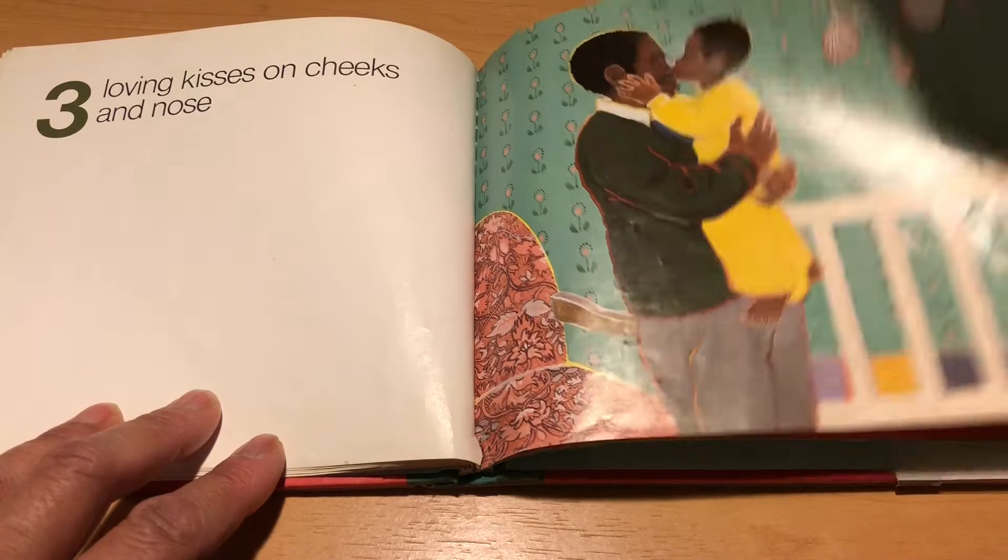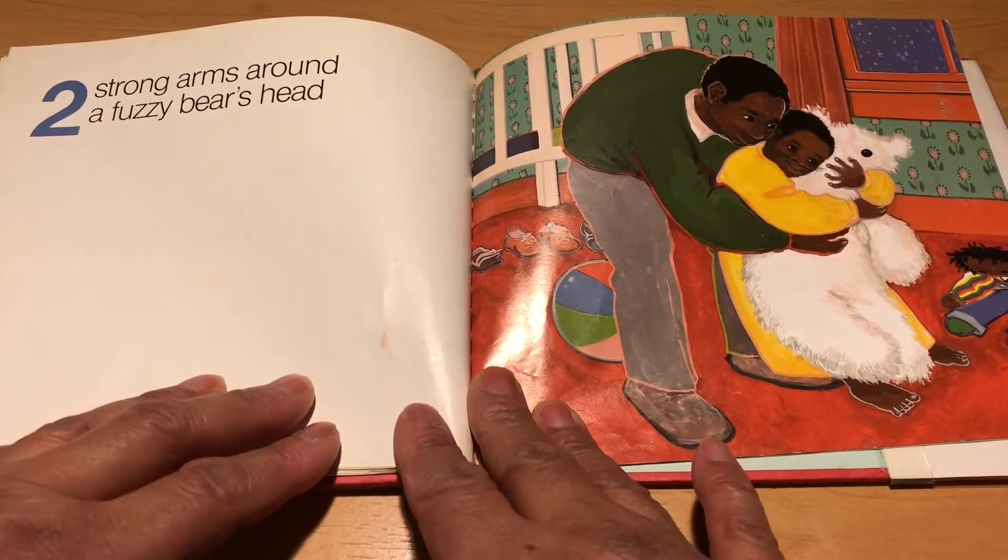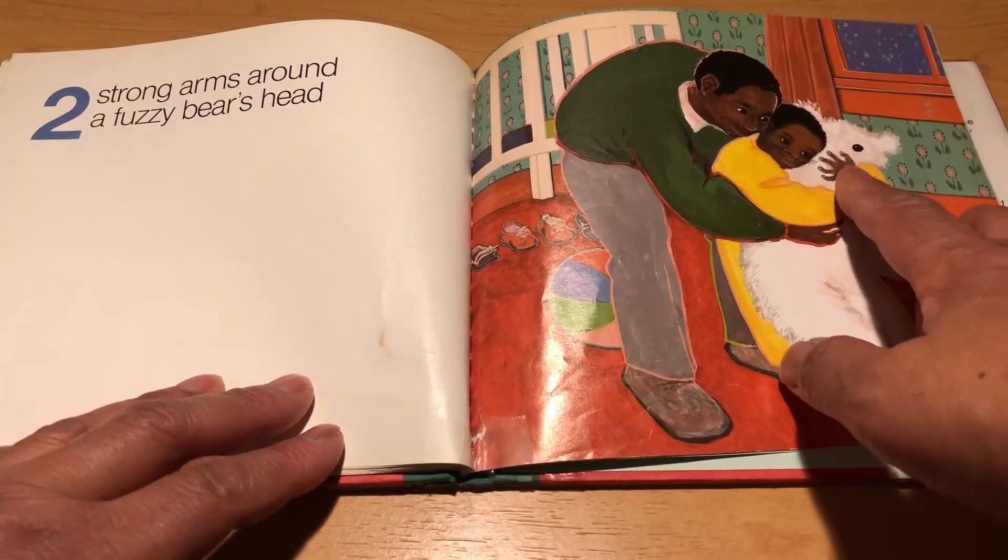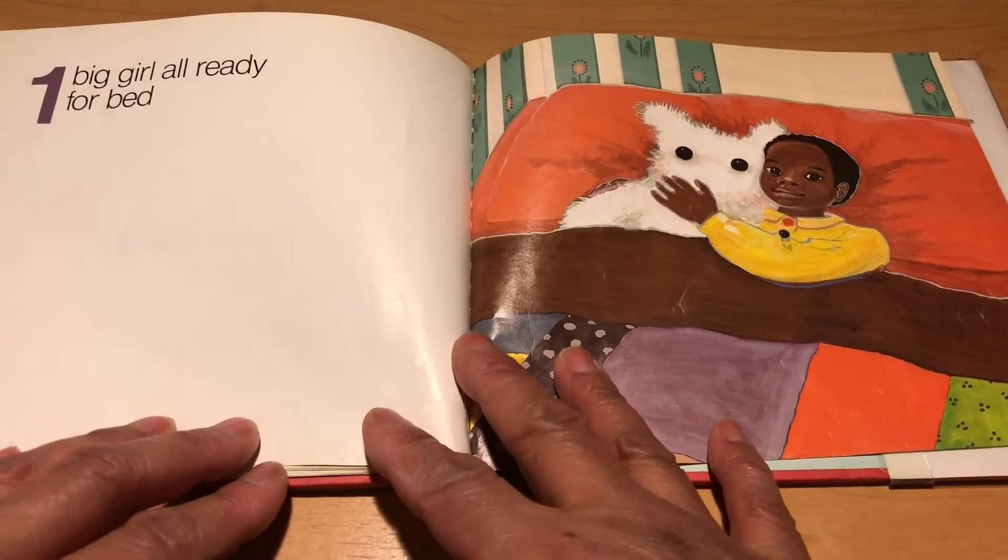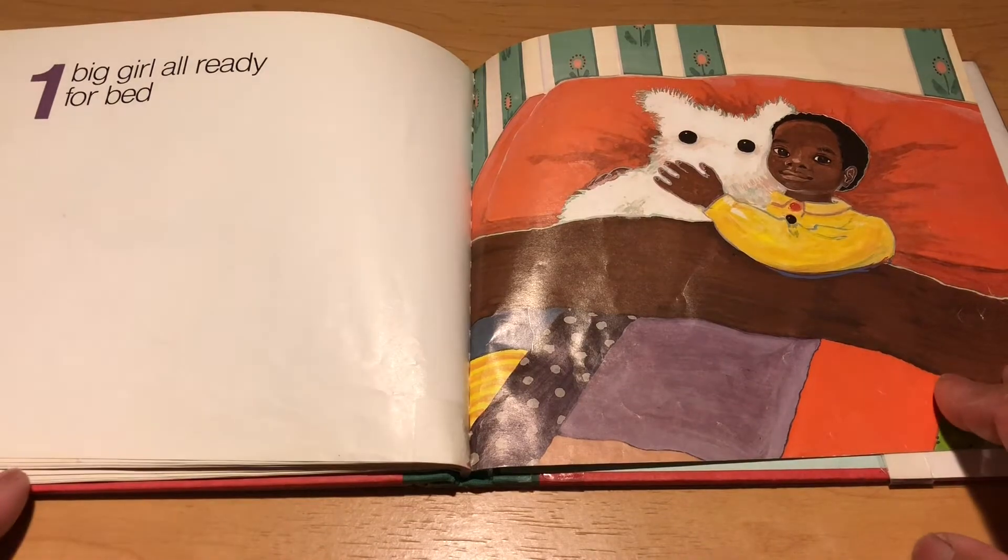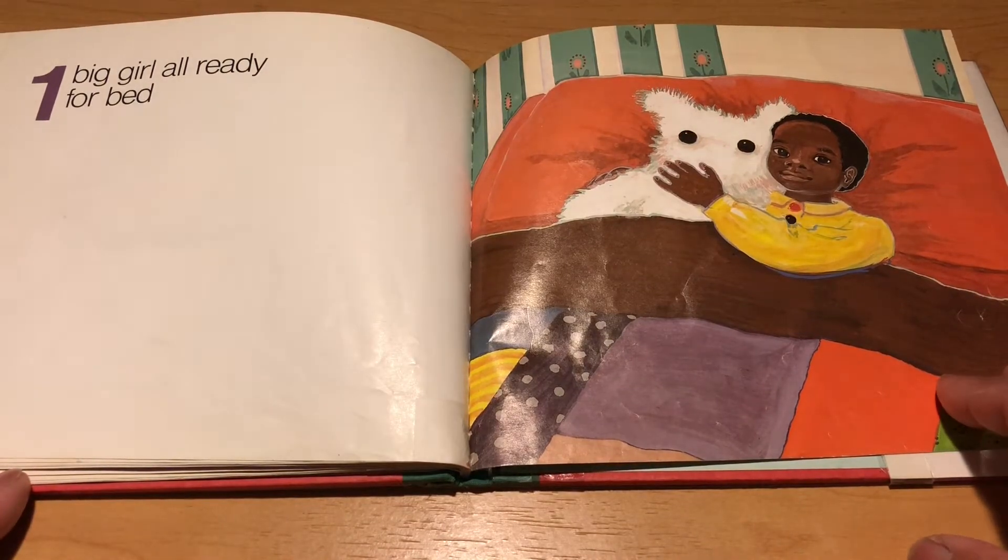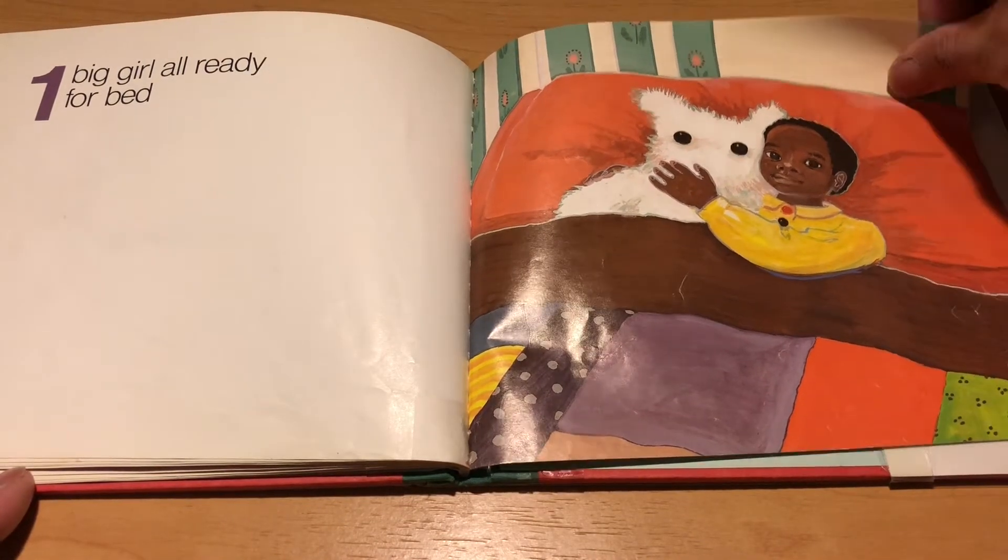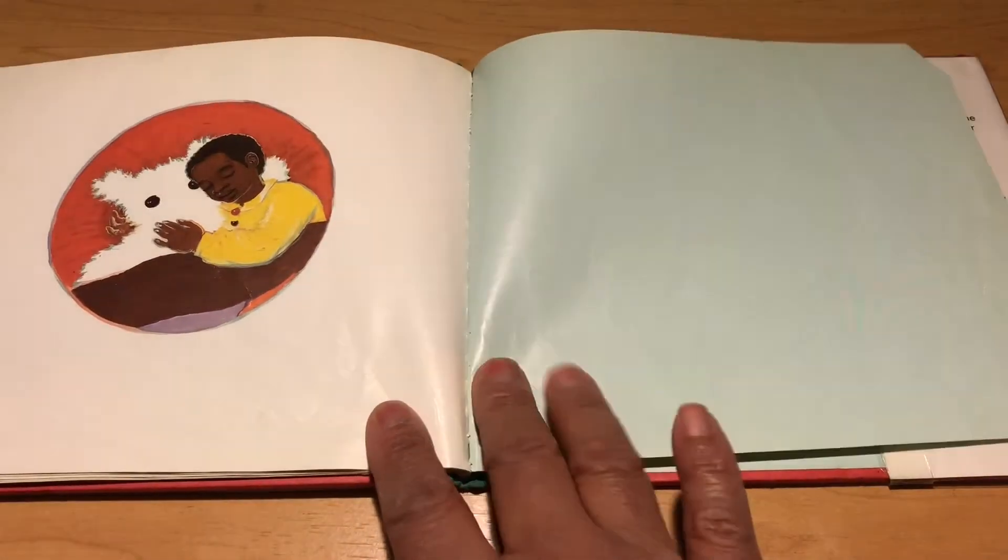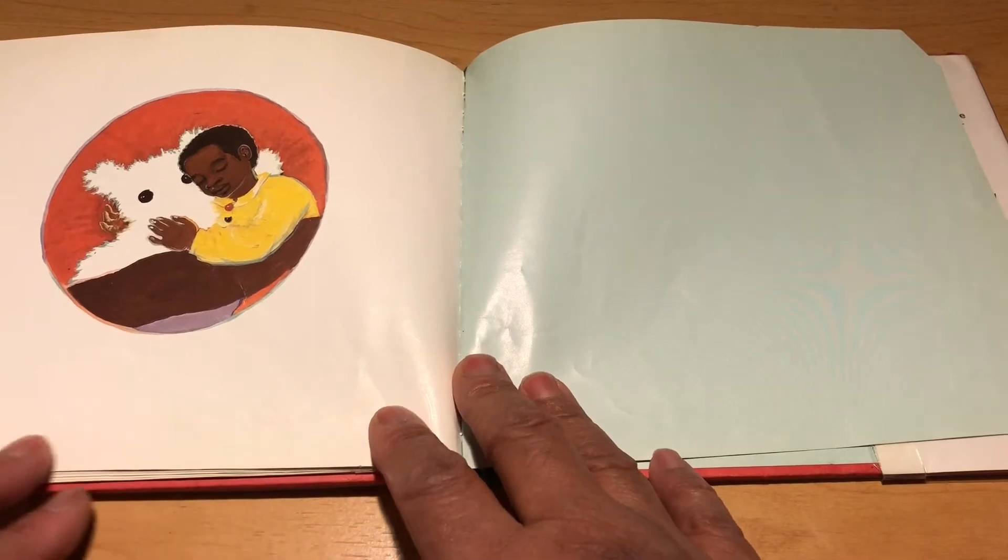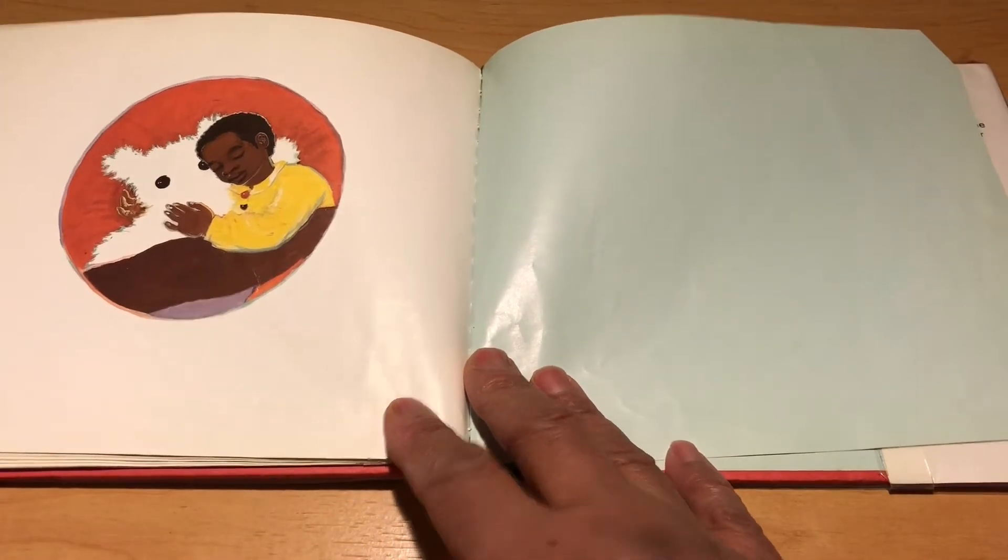Three loving kisses on cheeks and nose, two strong arms around a fuzzy bear's head, one big girl all ready for bed. Good night, the end.